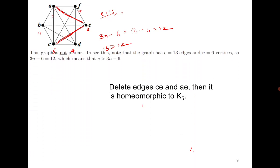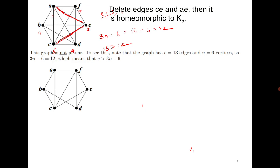Next question. For this graph, the Euler formula fails — it has fewer than 3n − 6 edges, so we cannot conclude non-planarity from that. Now applying Kuratowski's theorem: to have a subgraph homeomorphic to K5, we need at least 5 vertices of degree 4 or more. But this graph does not have 5 vertices of degree 4, so it cannot be homeomorphic to K5.